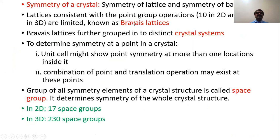The symmetry of a crystal as a whole is determined by the symmetry of the lattice and the symmetry of the base, since lattice plus base completely gives you the crystal. Lattices in two-dimensional have 10 point groups, and in three-dimensional have 32 point groups. Those lattices consistent with these point groups are the only permitted lattices and are called Bravais lattices — named after the physicist who discovered them. These Bravais lattices are further divided into different crystal systems, which we will see in the next section.